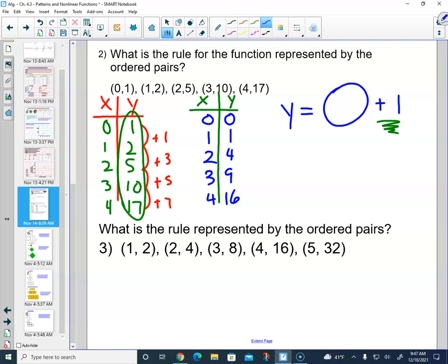Well, how does 2 become 4? Well, 2 squared is 4. Let's see if that works for everything else. 3 squared is 9. 4 squared is 16. So I now know that I am squaring the x value.